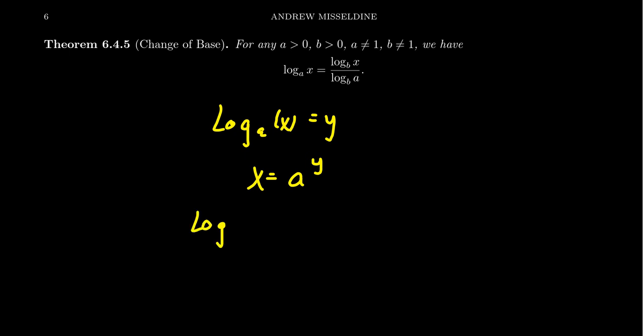Then take the log base b of both sides of this equation. So you get log base b of a to the y. Well, on the right-hand side, the third law of logarithms comes into play where you can pull an exponent out and put it as a coefficient.